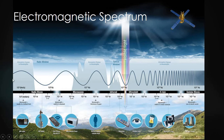The electromagnetic spectrum includes, from largest wavelength to smallest: radio waves, microwaves, infrared waves, ultraviolet, X-rays, and gamma rays. Radio waves have the biggest wavelength and the lowest frequency, while gamma rays have the smallest wavelength and the highest frequency.